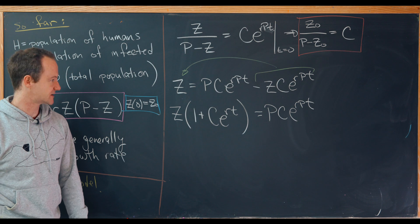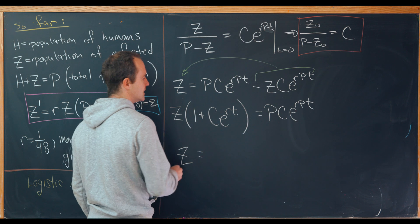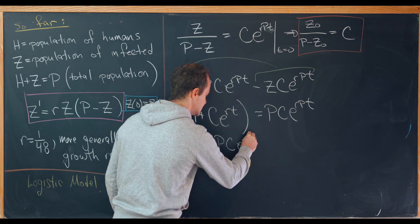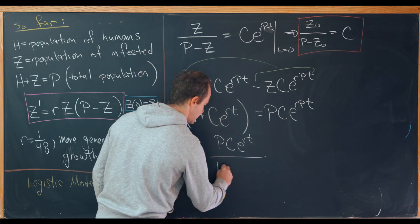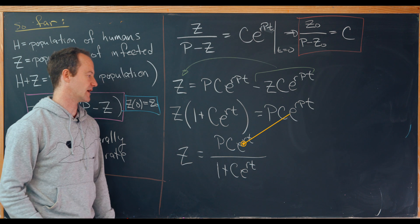Okay, nice. But now let's notice that we can easily solve for Z at this point. So we have Z is equal to P times C E to the RT over one plus C E to the RT. So we're left with something like that.